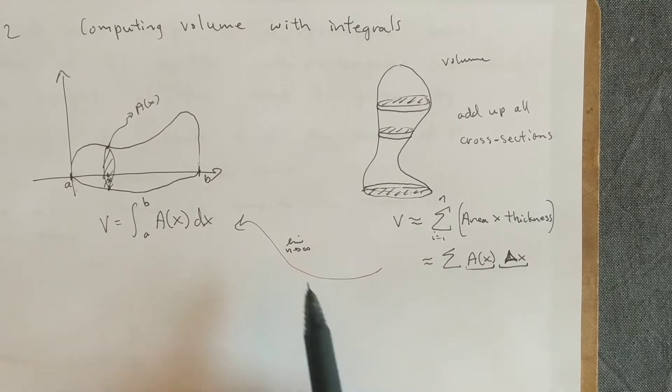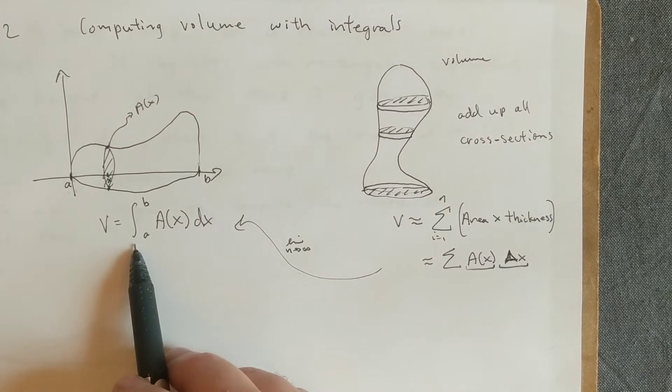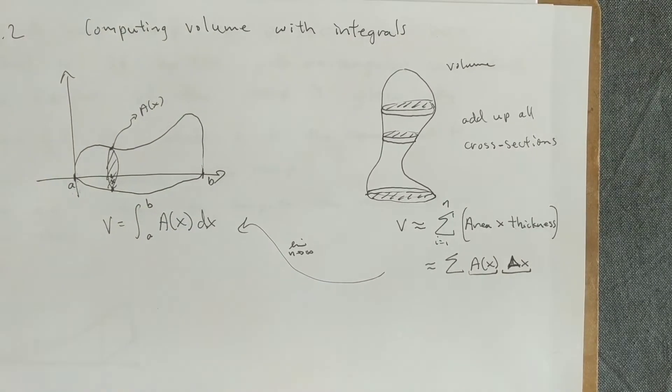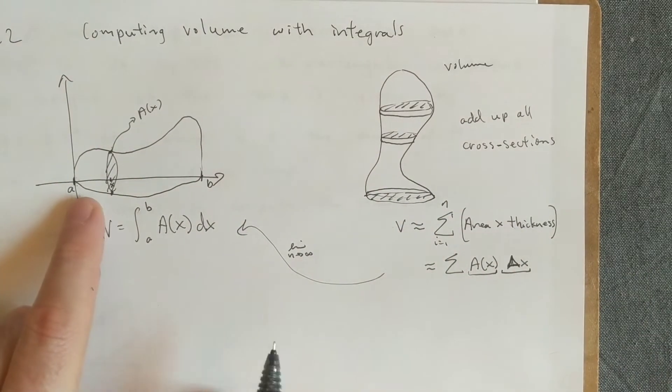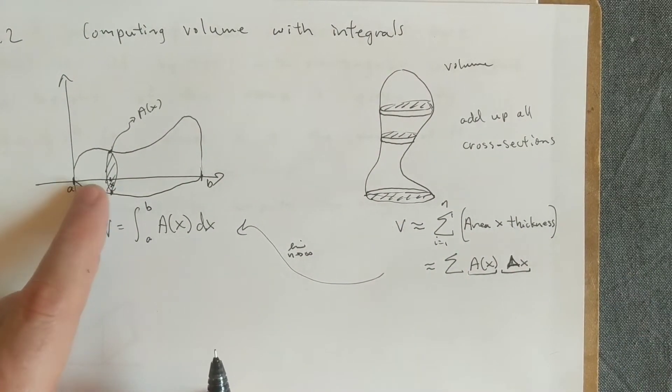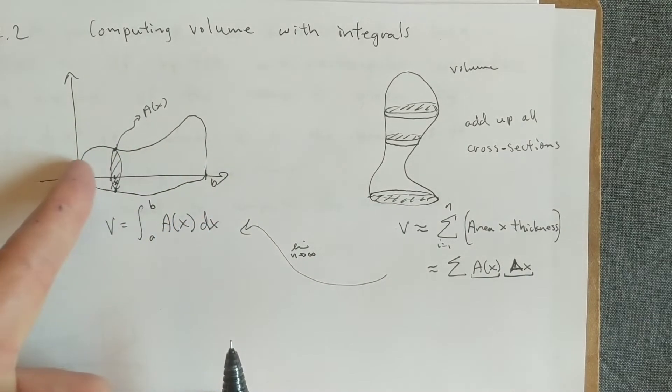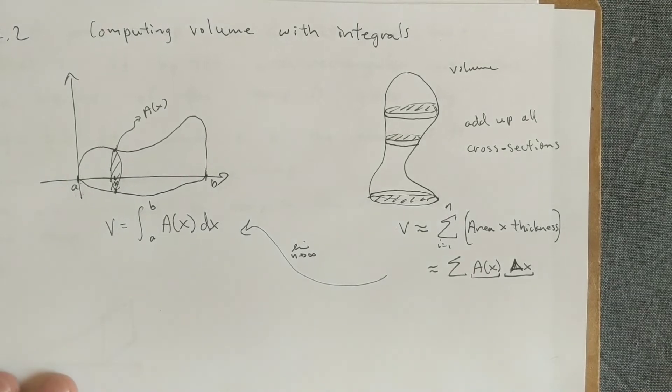and then if we take the limit as n goes to infinity, we'll end up with an integral, and this should be the exact volume, if we're able to write the area of the cross-sections as a function of x. And so what we're thinking of is this sort of shape, sort of scanning through the whole shape, and at each value of x, we're going to take the area with respect to x.